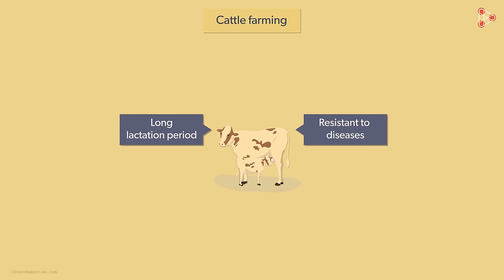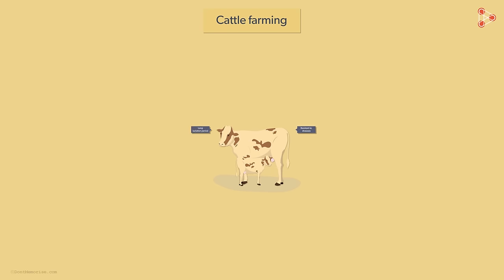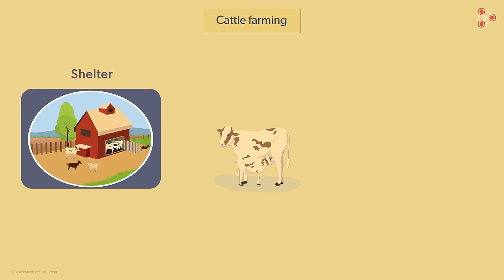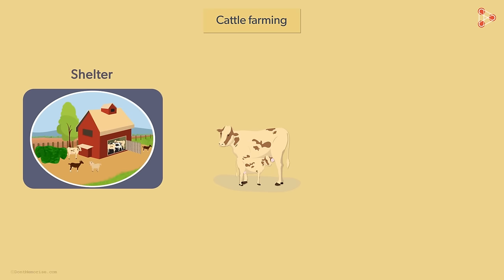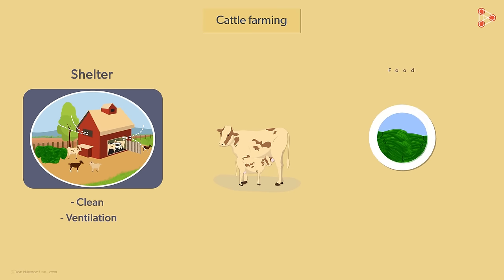Exotic breeds have many desirable qualities apart from long lactation periods, including excellent resistance to diseases. These exotic breeds have been crossbred to find the ideal type of cattle. However, having exotic breeds does not ensure good outcomes alone — cattle need to be taken care of. Owners must make adequate provisions of shelter and food. These shelters must adhere to basic requirements of hygiene, including cleanliness and proper ventilation.